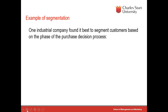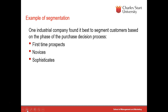Industrial companies can also use segmentation. Here's one from your text: customers could be segmented on the basis of where they are in the decision-making process — first-time prospects, novices, and sophisticated users — and all of these may have quite different types of behavior.